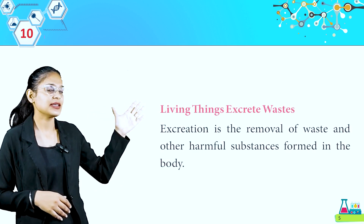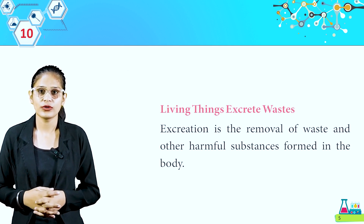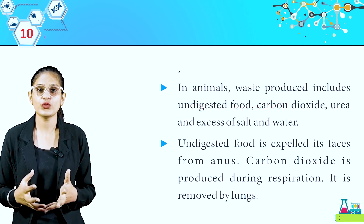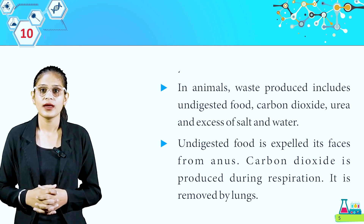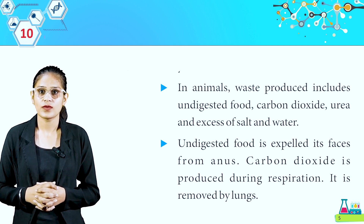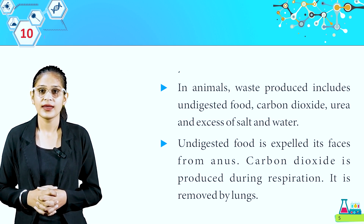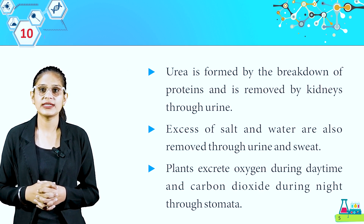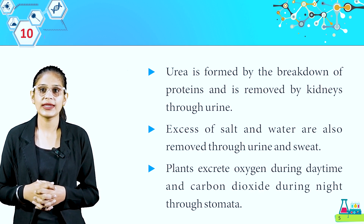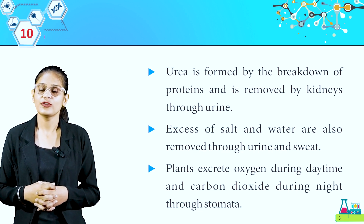Living things excrete waste. Excretion is the removal of waste and other harmful substances formed in the body. In animals, waste products include undigested food, carbon dioxide, urea, and excess salt and water. Undigested food is expelled as feces from the anus. Carbon dioxide produced during respiration is removed by the lungs. Urea, formed by the breakdown of proteins, is removed by kidneys through urine. Excess salt and water are also removed through urine and sweat. Plants excrete oxygen during daytime and carbon dioxide during night through stomata.